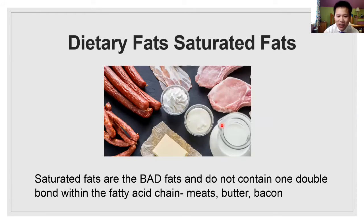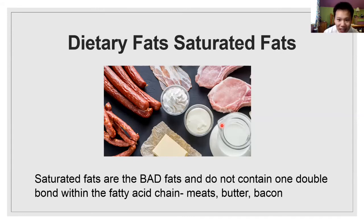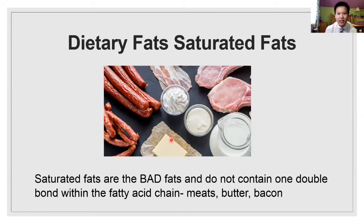However, saturated fats, you want to think of these as your bad fats. They do not contain the double bond. These are your fatty meats like your bacon, your pork, your hot dogs, and your butter. So when you cook, try to avoid butter. I'm not saying don't eat butter or bacon, but try to cut down on your consumption of saturated fats and increase your consumption of unsaturated fats.